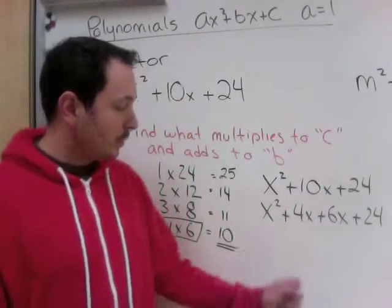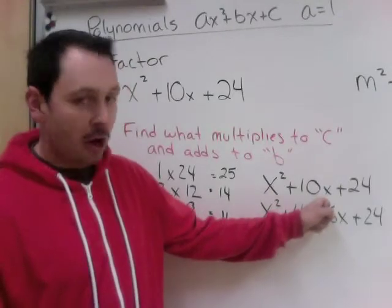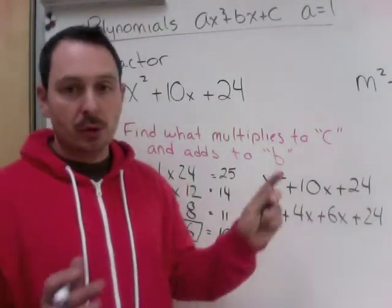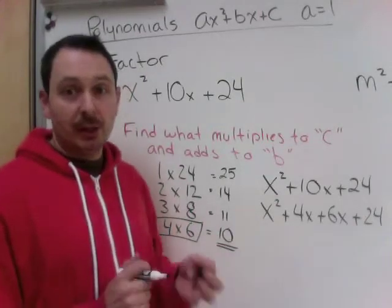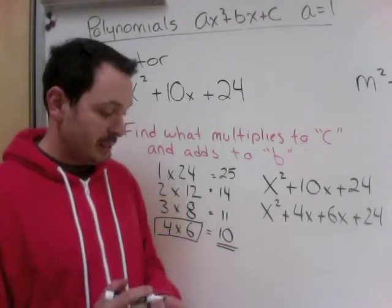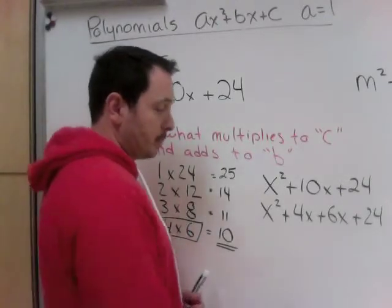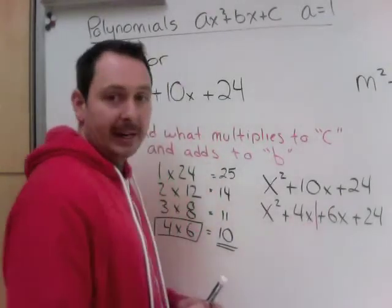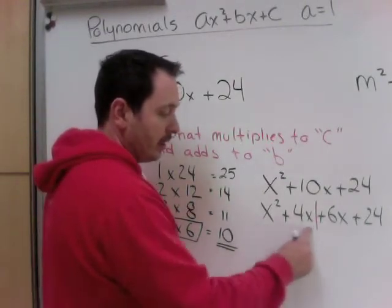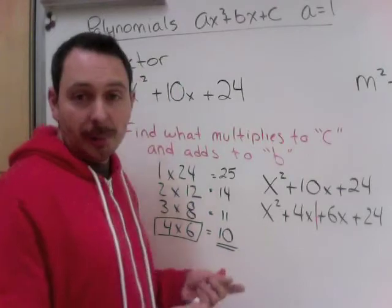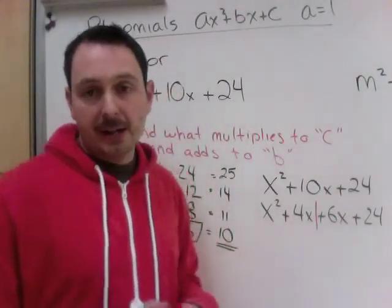Now, I haven't broken any rules because x squared is x squared. 4 and 6x are 10x plus 24. I haven't changed its value. I've changed the way it looks, but its value still holds the same. Now, to factor these, break it in half and factor these two using the common factors.